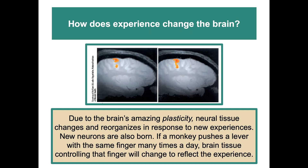Due to the brain's amazing plasticity — as discussed in the biological basis of behavior unit — neural tissue changes and reorganizes in response to new experiences, and new neurons are also born. If a monkey pushes a lever with the same finger many times a day, the brain tissue controlling that finger will change to reflect that experience. The environment can actually change the brain.